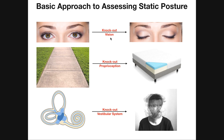We've got the visual system, proprioception, and the vestibular system. The visual system is obviously the eyes — we see with our eyes.